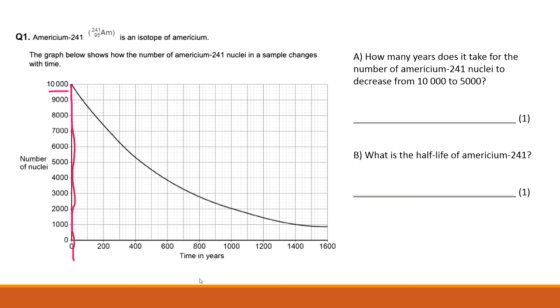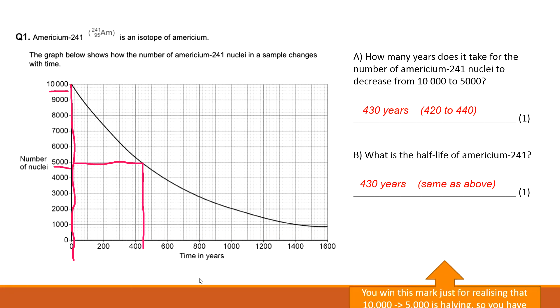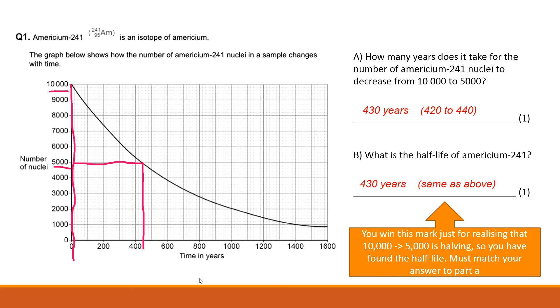How many years does it take for the number of americium-241 nuclei to decrease from 10,000 to 5,000? So 10,000 is there, 5,000 is there. Really we should have drawn this with a straight line, it's just hard to do on the PowerPoint, but you'd go across with a straight line until you hit the curve, down until you hit the axis. The answer done with a straight line is 430 years. You can give yourself the point if you've got anything between 420 and 440. What's the half-life of the americium? It's taken 430 years to go to half of its initial value, to drop from 10,000 to 5,000, so that would be exactly the half-life. You have measured the half-life off the half-life curve.